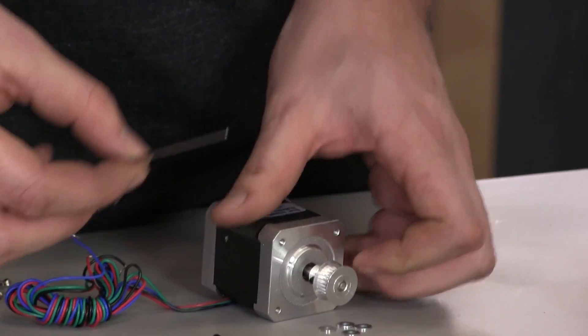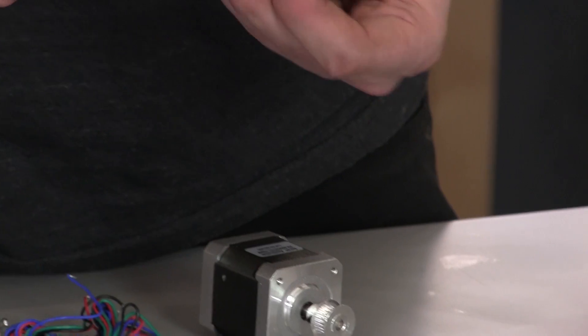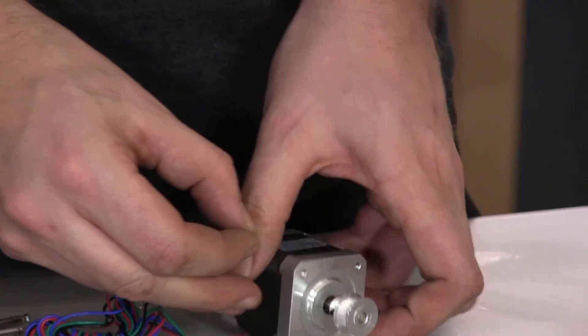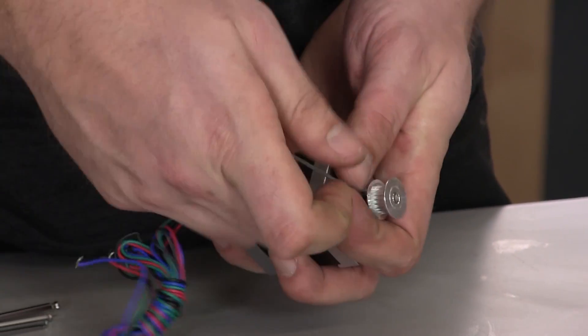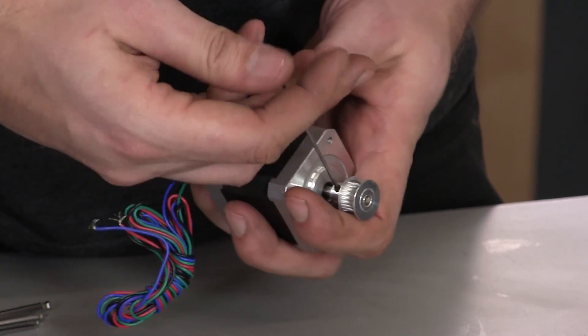You don't need to get them too tight right now as we'll be adjusting the placement of the pulley on the motor later in the assembly. So just tighten them enough to keep the pulley in place for now.